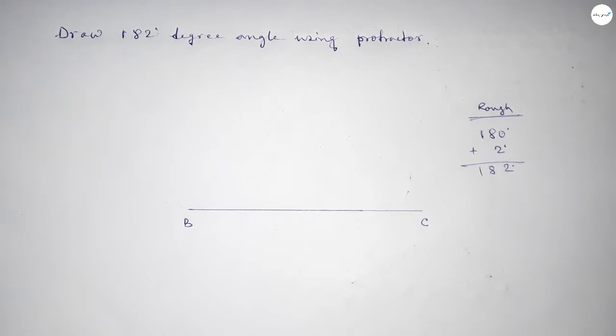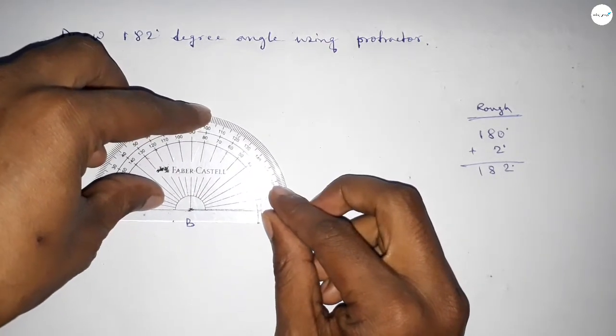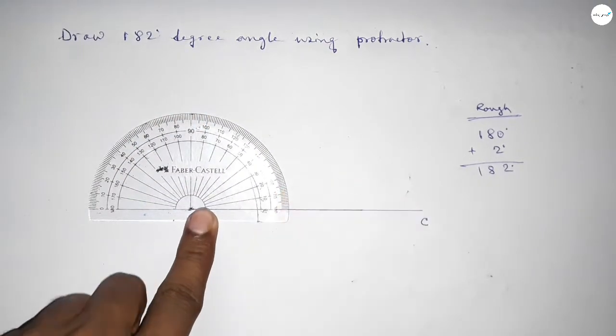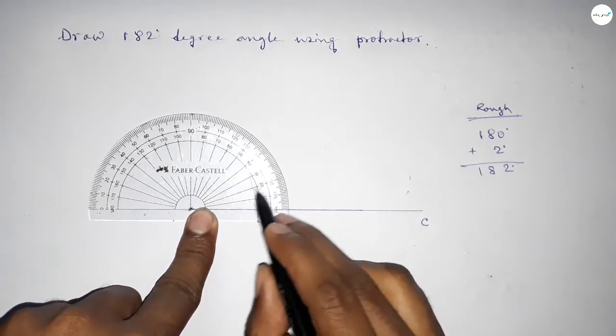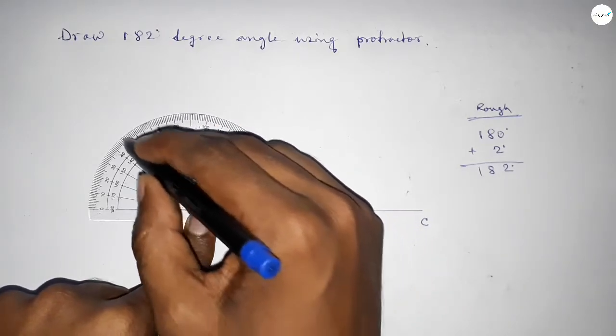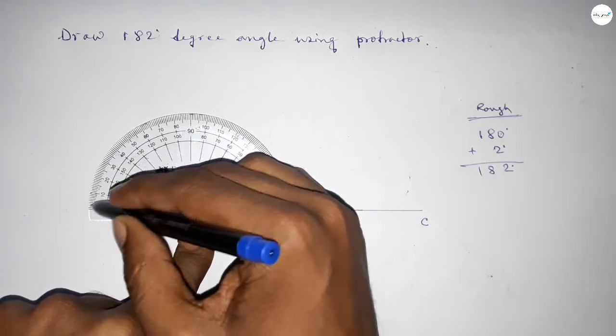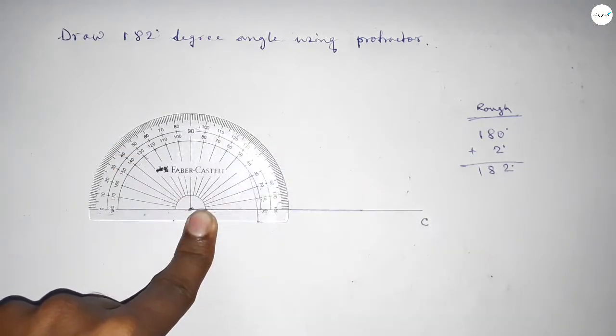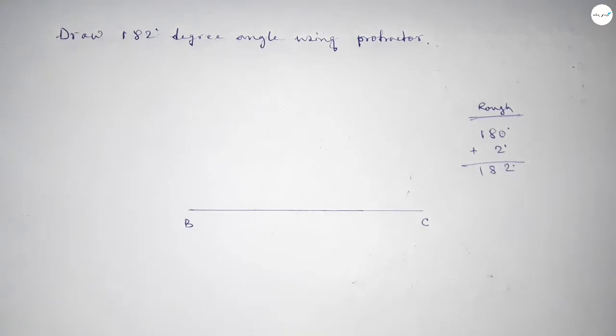We place the protractor on point B perfectly, then count the angles: starting at 0, 10, 20, 30, 40, 50, 60, 70, 80, 90, 100, up to 180 degrees.